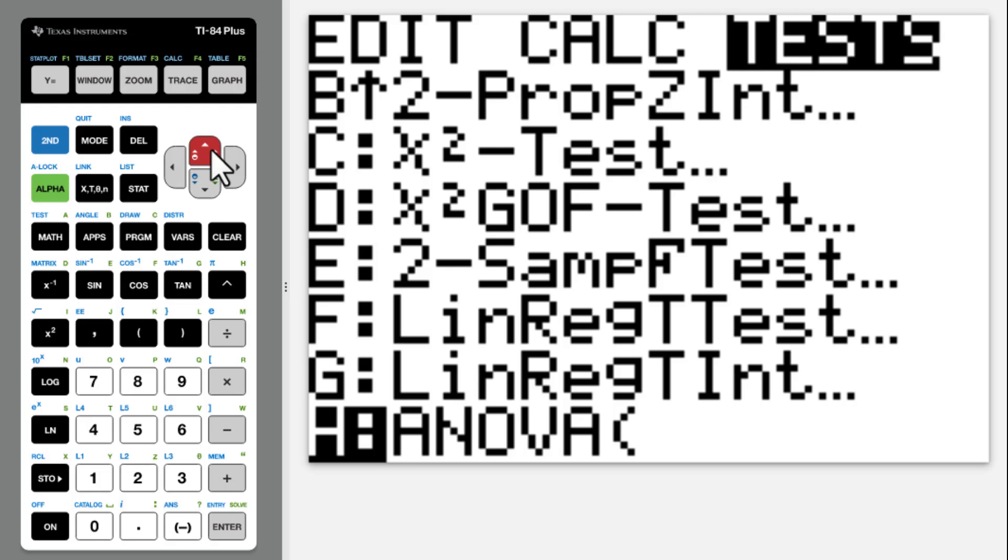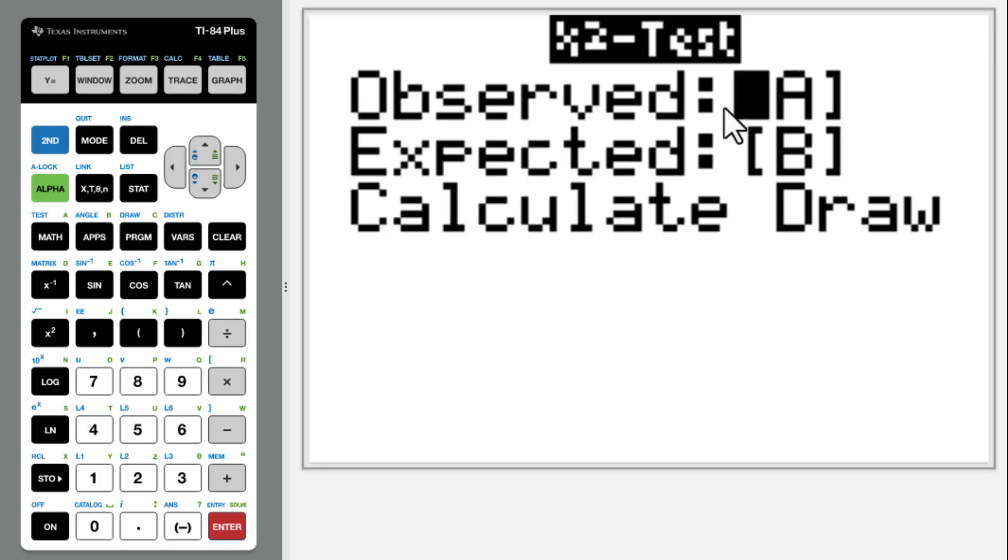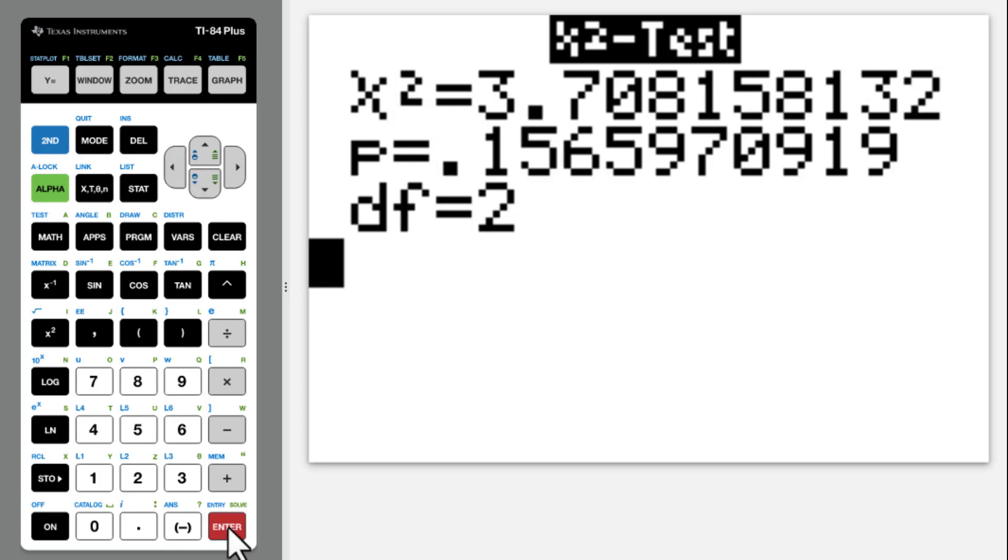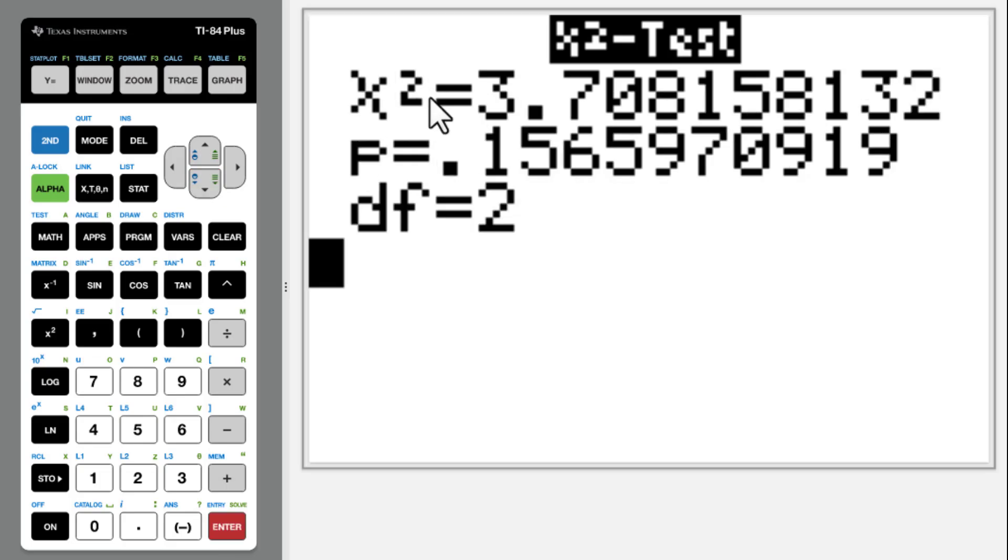Chi-square test. 2nd x to the negative 1st. Observed data we already put in matrix A. The calculator will give you the expected data in matrix B. Then calculate. Chi-square equals 3.71.